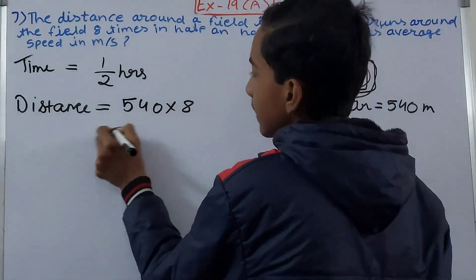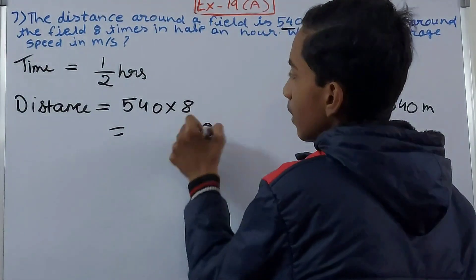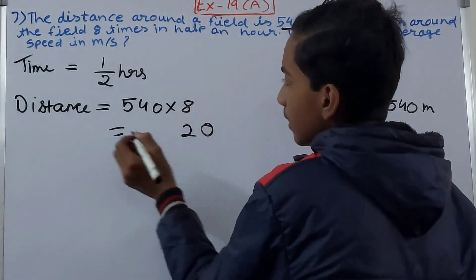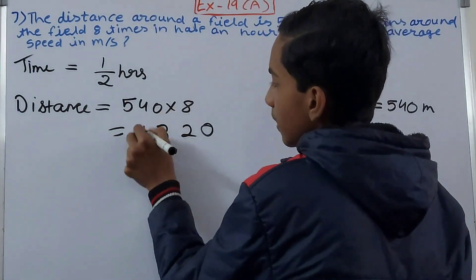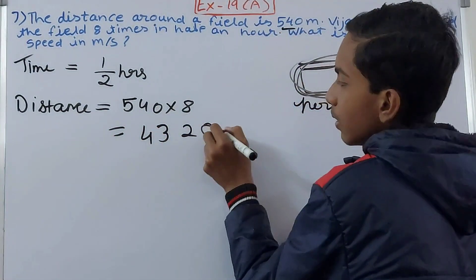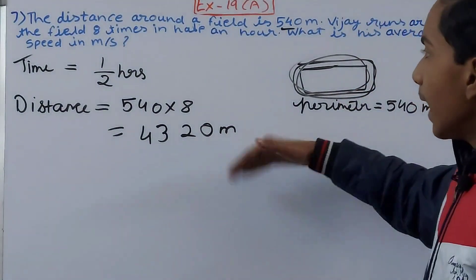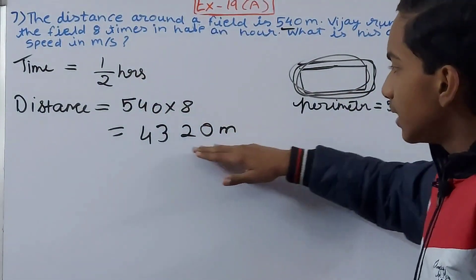And that becomes - 8 into 4 is 32, and 3. 8 into 5 is 40 and 3. So 4320 meters. So distance is in meters and you see time is in hours.